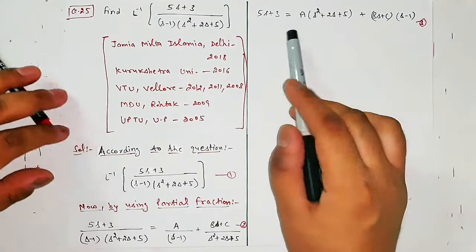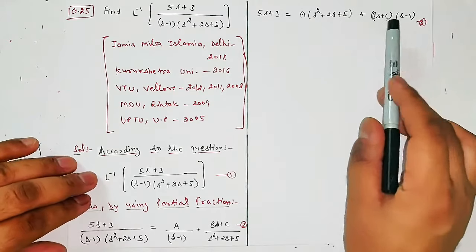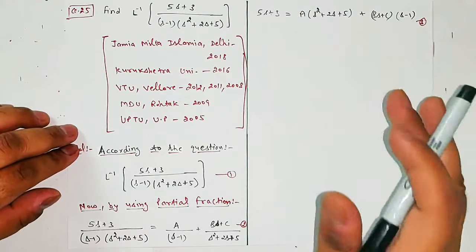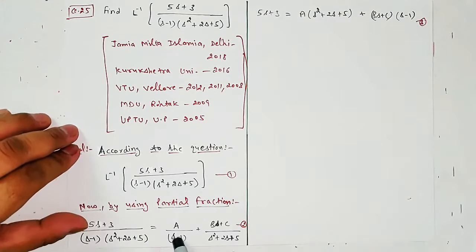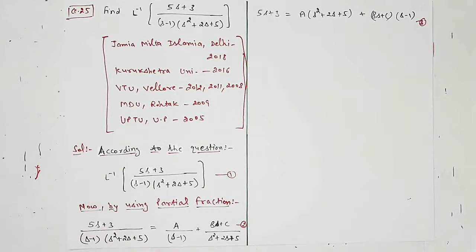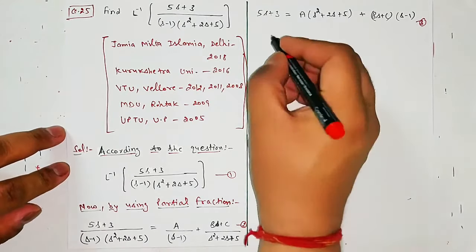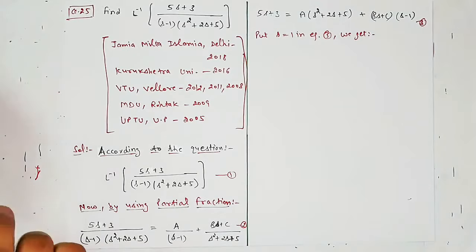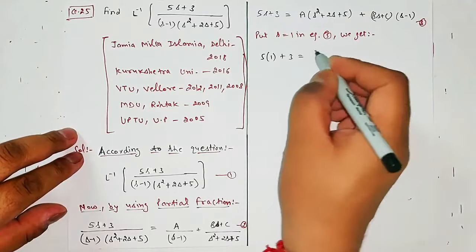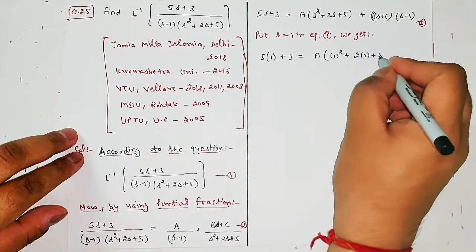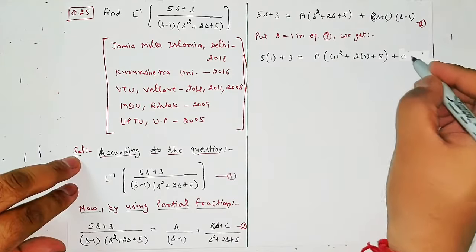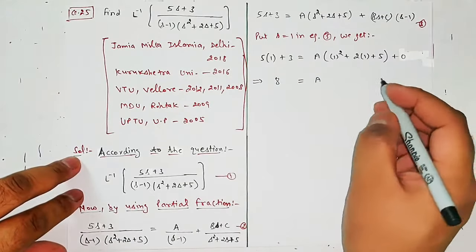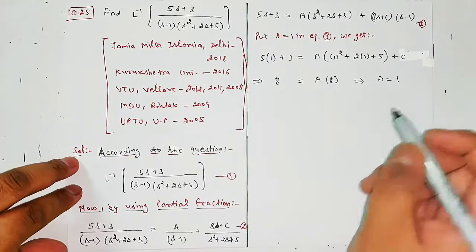If you look carefully, there are four unknowns: S, A, B, C. To find A, B, C you need to put values of S — you are totally free with the value of S. But it is always good, if there is a linear factor, to ask at what value it becomes zero. Here S - 1 becomes zero at S = 1. So put S = 1 in equation 3. We get: 5×1 + 3 = A(1 + 2 + 5). That gives 8 = 8A, so A = 1.